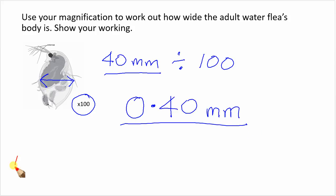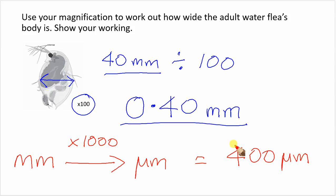Again, for a bit of extra challenge, if we were to convert millimetres into micrometres, what would that be? 0.4 millimetres in micrometres, we need to multiply it a thousand times. So it's actually going to be 400 micrometres wide.